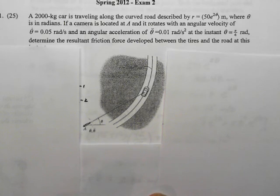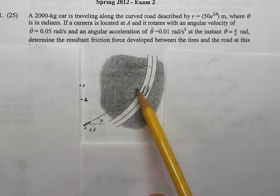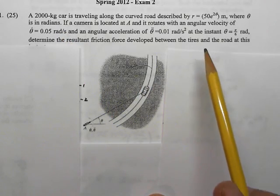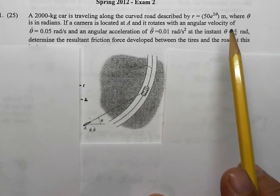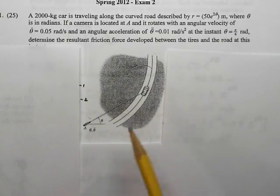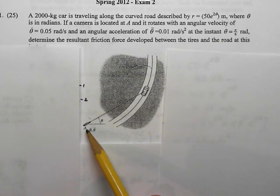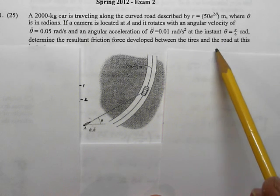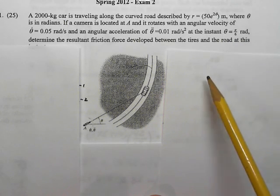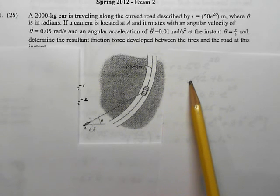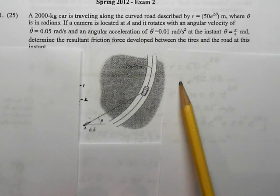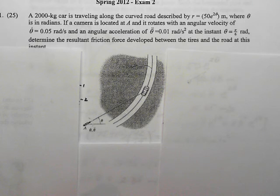This problem says we have a 2,000 kilogram car traveling along a curved road described by the equation r = 50e^(2θ), where r is measured in meters and θ in radians. A camera is located at point A and rotates with angular velocity θ-dot = 0.05 and θ-double-dot = 0.01 at the instant θ = π/6 radians. Determine the resultant friction force between the tires and the road at this instant. The camera is at the origin of a cylindrical coordinate system. I suggest you pause the movie.